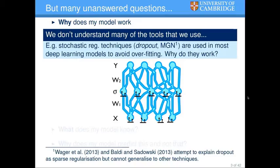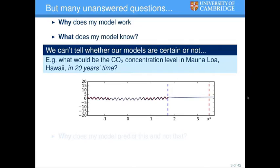Over the past couple of years, the field has been driven by pragmatic developments of tractable models that work well and scale well, but pushed forward mostly by practitioners, and many theoretical questions were left unanswered. For example, why does my model work? We don't understand many of the tools we use — stochastic regularization techniques like dropout or multiplicative Gaussian noise are used in most of modern deep learning to avoid overfitting, but why do they make sense?